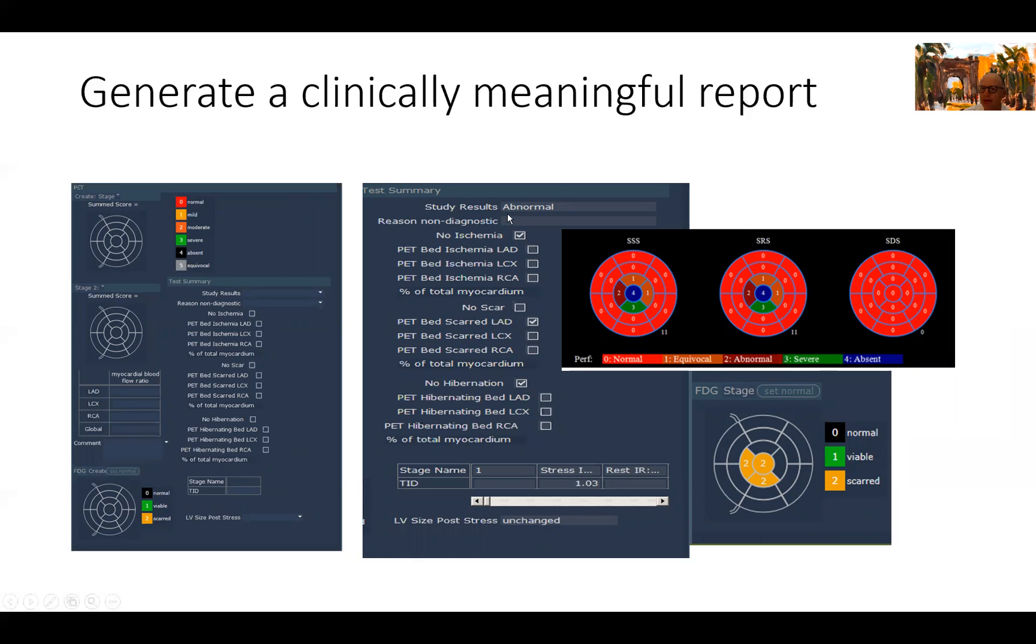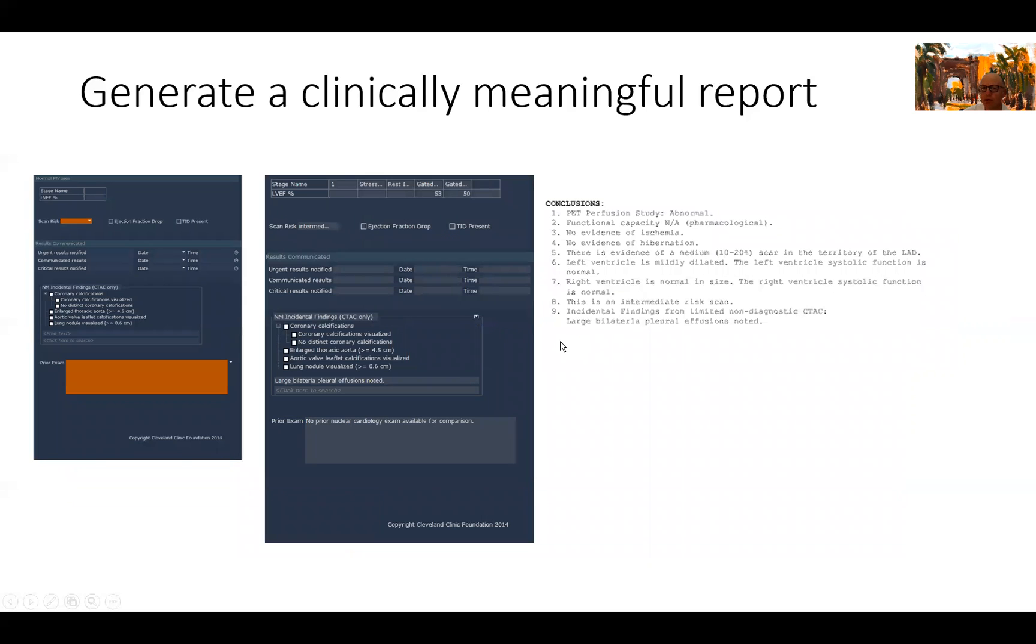Then we go to report the test summary. In this instance, we have no ischemia. This is an abnormal test with no ischemia in any territory. Given what we talked about before, we coded this area on the FDG as scarred. There was no hibernation, and we called an area of scar in the territory of the left anterior descending artery as depicted here. We move next to report the final conclusion of the study. This is a study that is abnormal, no evidence of ischemia, no evidence of hibernation. What we have here is a medium amount of scar. The SDS score said it's 11, and so the segments represent a little bit more than 10% of myocardium but less than 20% of the total myocardium. We report this here. We have no calcification visualized in coronary arteries, and we report left ventricular size and function, and we report the pleural effusions right here.